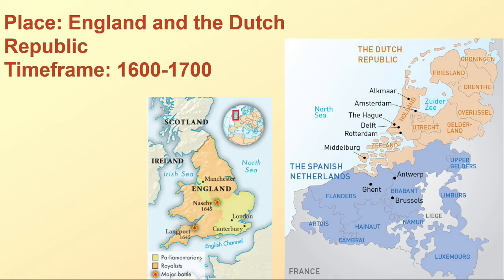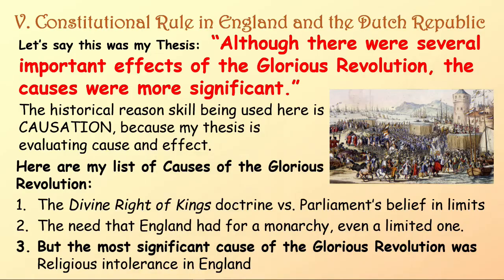We're talking about England and the Dutch Republic, and the time frame is from about 1600 to 1700. Here's a sample thesis: Although there were several important effects of the Glorious Revolution, the causes were more significant. I could turn that around and argue the effects were more significant — the point is to take a stand and support it with evidence. The historical reasoning skill being used here is causation, because my thesis is evaluating cause and effect.